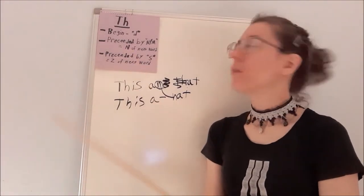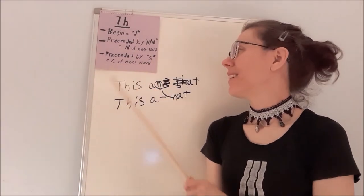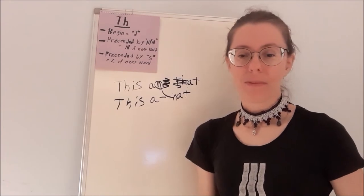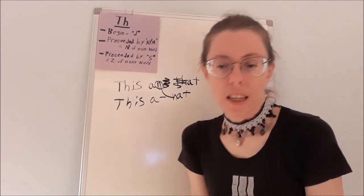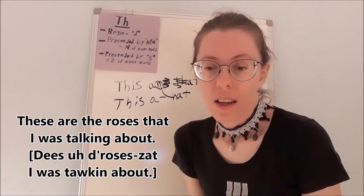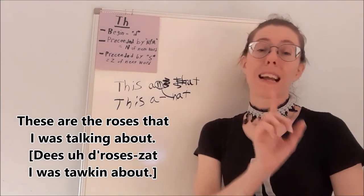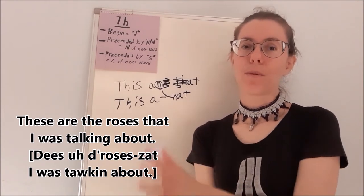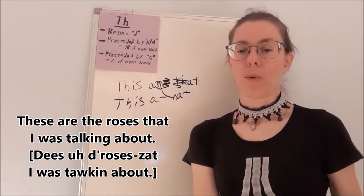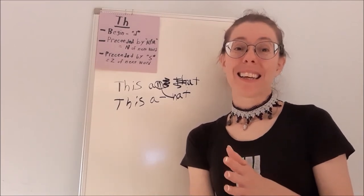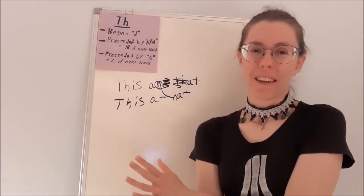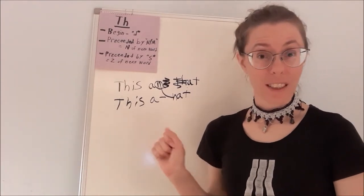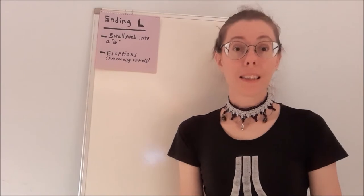Next one: when it's preceded by an S, it turns into a Z and then starts the next word. For instance, these are the roses that I was talking about. But when you say it fast, these are the rose-e-sat I was talking about. These are the roses that I was talking about. Not those. These are the roses.